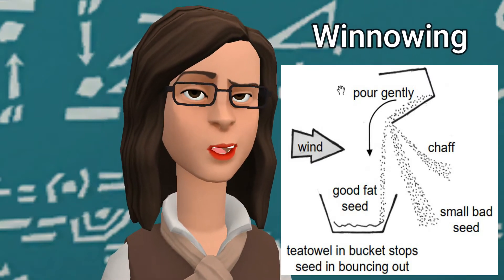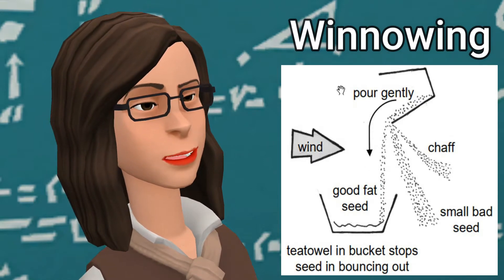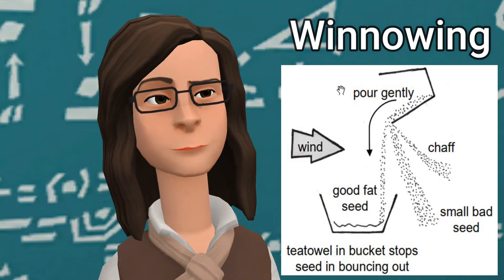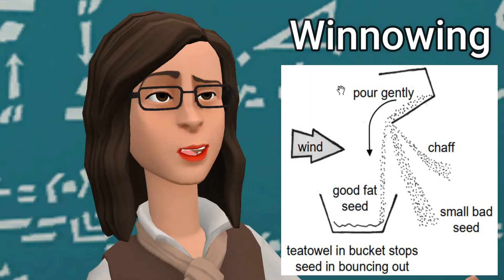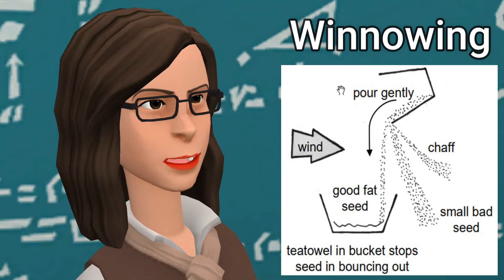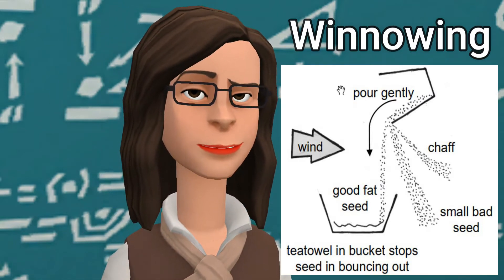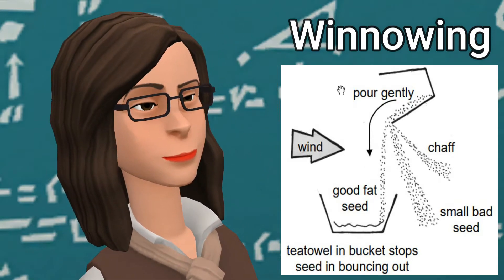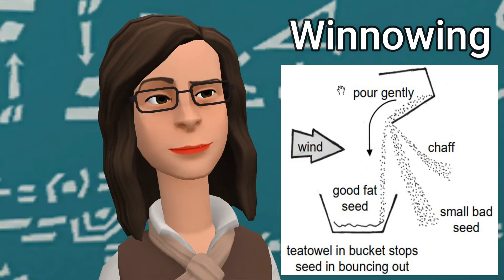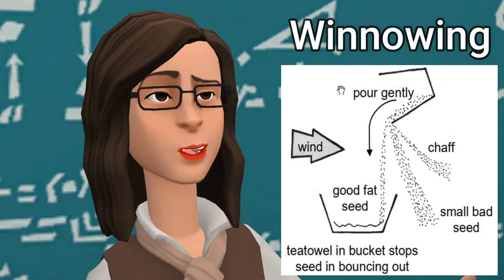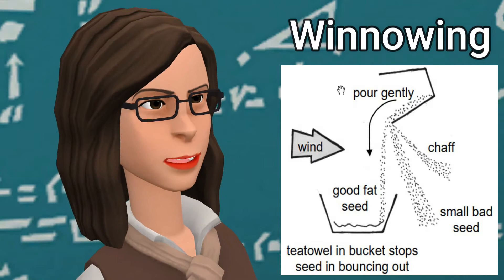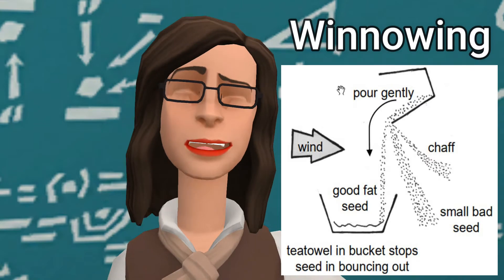Winnowing: It is the method of separating a mixture in which heavier components are separated from lighter components with the help of wind. Winnowing is used to separate heavier and lighter components of a mixture by wind or by blowing air. This method is commonly used by farmers to separate lighter husk particles from heavier seeds of grain. It is the process of freeing grain from lighter particles or impurities like chaff and dirt by throwing it into the air and allowing the wind or a forced current of air to blow the impurities away.